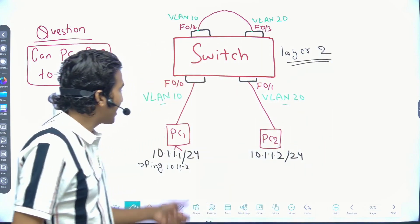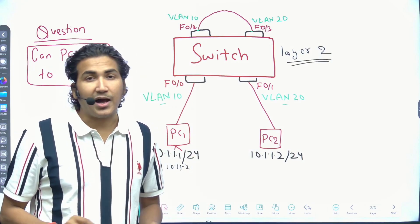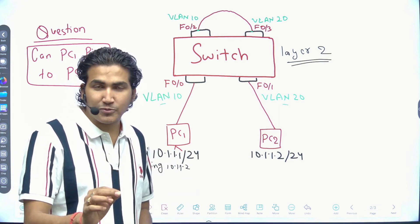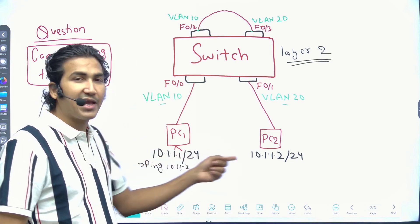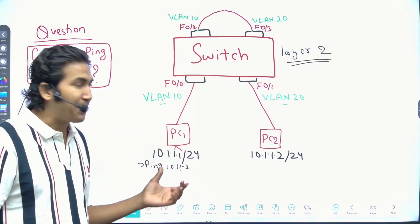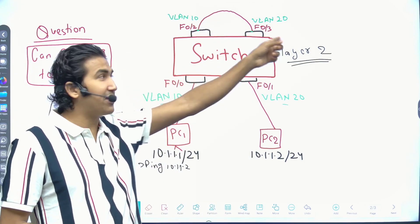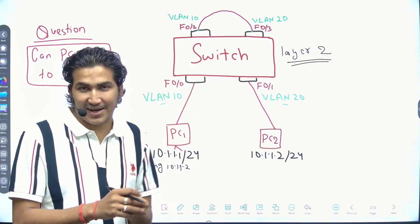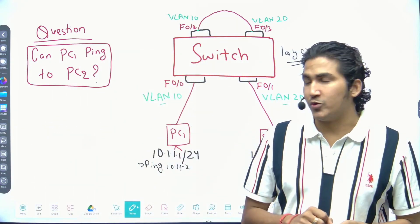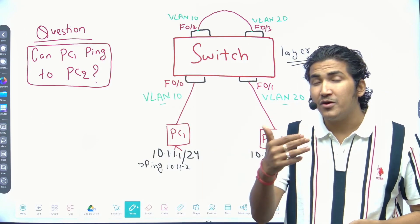If you are thinking the answer is no, you are wrong. The answer is yes — these two PCs can communicate. You can try it, but not in Packet Tracer because we need real devices to connect two ports directly with an Ethernet cable. This is not a real-time scenario; it's a question to check your VLAN knowledge.